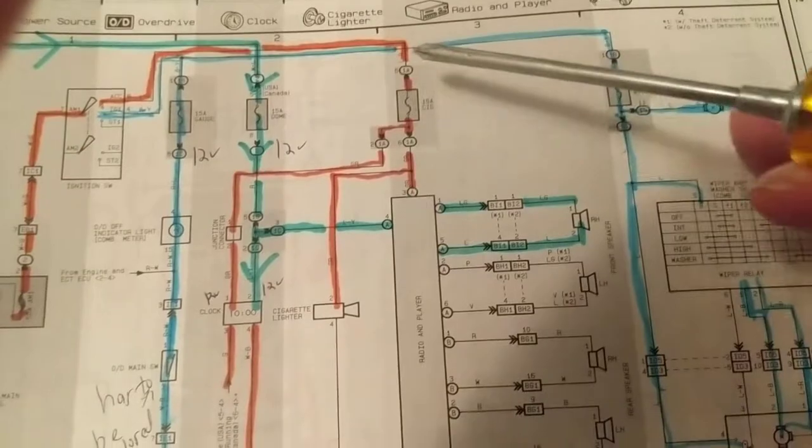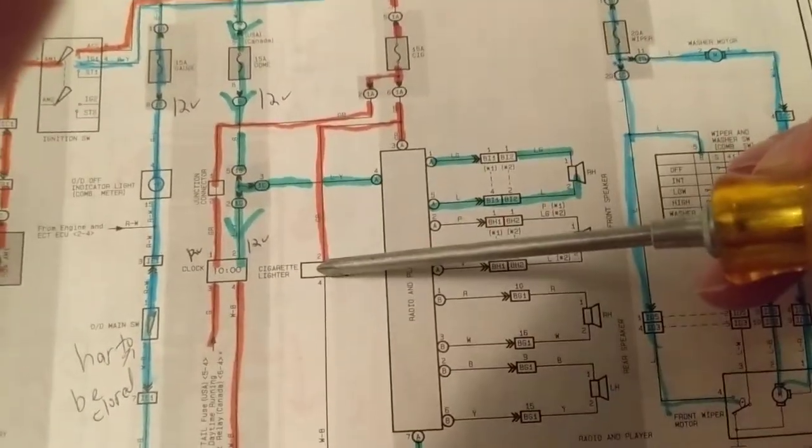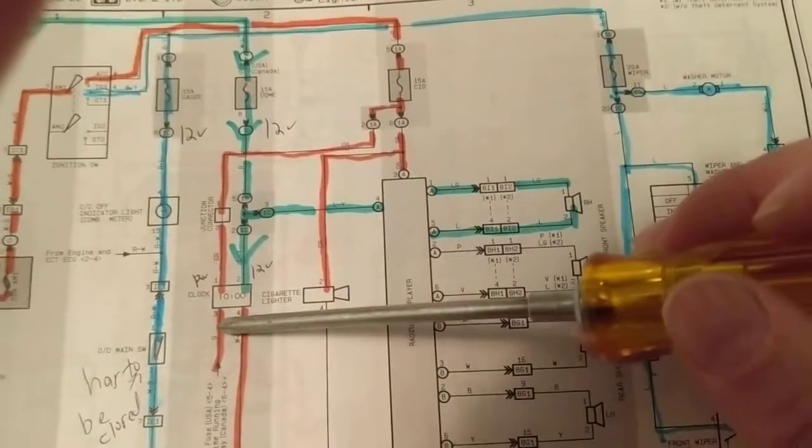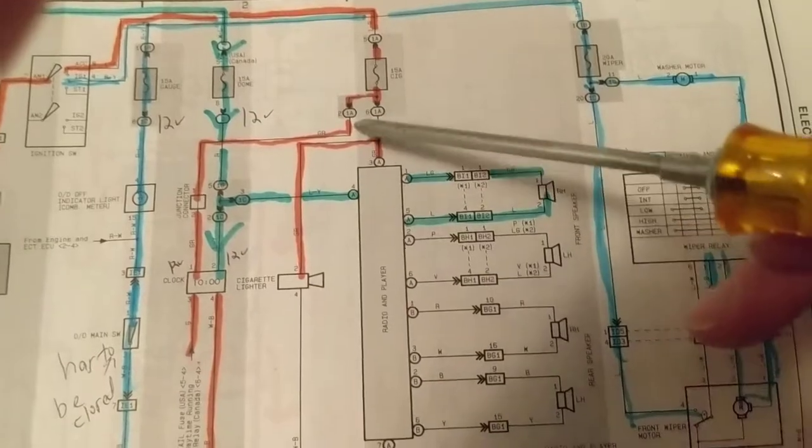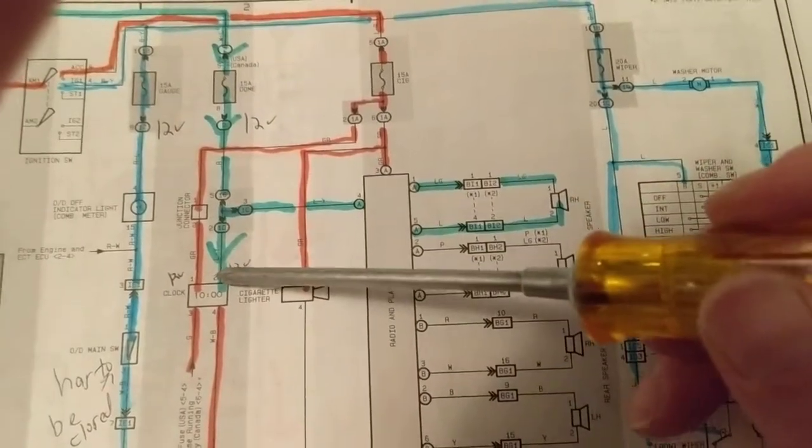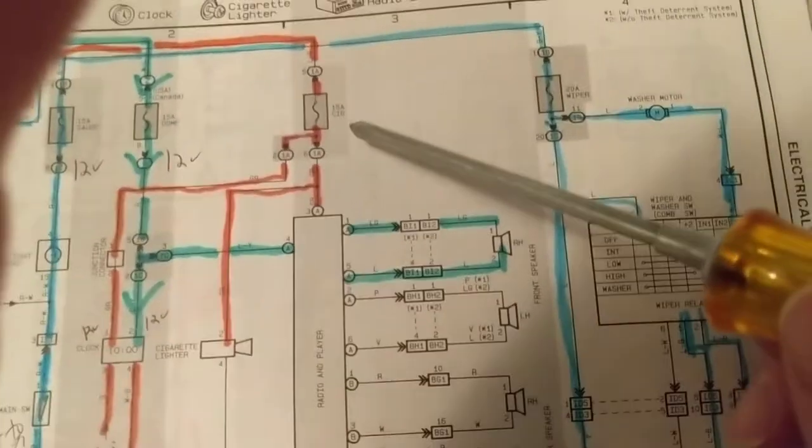From the schematic, you can tell. The question is, is my cigarette lighter working? And is my clock working? What does that tell me? If my cigarette lighter is working and my clock is working, my clock display is working, that means that this fuse has to be good.